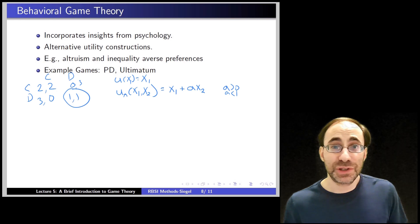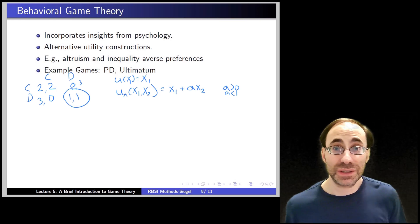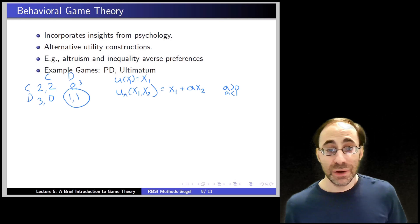You have a utility function that depends on your own payoffs plus your partner's payoffs. Let's say it looks like this: you care about your own payoffs as before plus there's some constant a times your opponent's payoff. And to avoid being too excessive, let's assume that a is greater than zero and a is less than one. You don't care about your opponent as much as you care about yourself, but you do care about them more than nothing. What happens then? How does the Prisoner's dilemma change in this context?